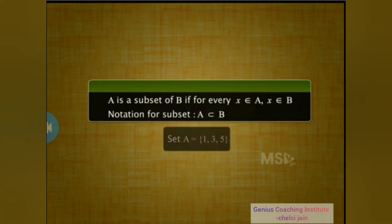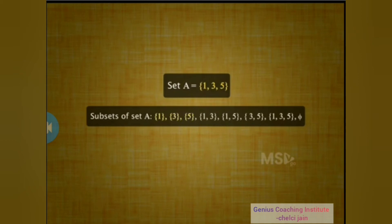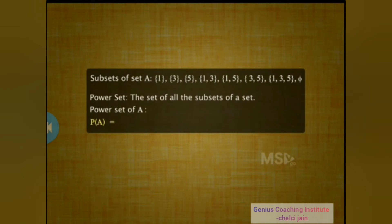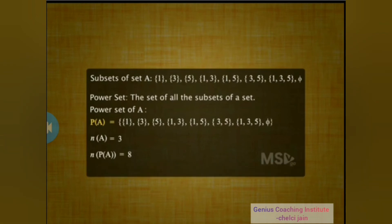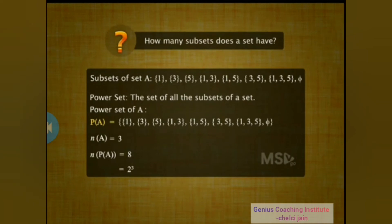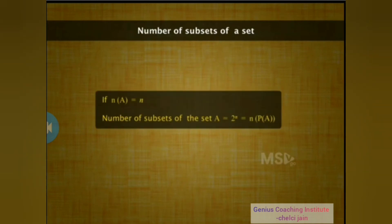We have discussed subsets and considered when one set is a subset of another. Let's now write the subsets for a given set, say set {1, 3, 5}. To write the subsets of set A, first we write sets with one element, then sets with two elements, then the set with all three elements, and finally the null set. The set of all these subsets of A is called the power set of A, denoted P(A). There were three elements in set A and there are eight elements in the power set — notice that 8 is 2 raised to the power of 3. So if n is the cardinality of set A, then the number of subsets of set A is 2ⁿ, which is the cardinality of P(A).